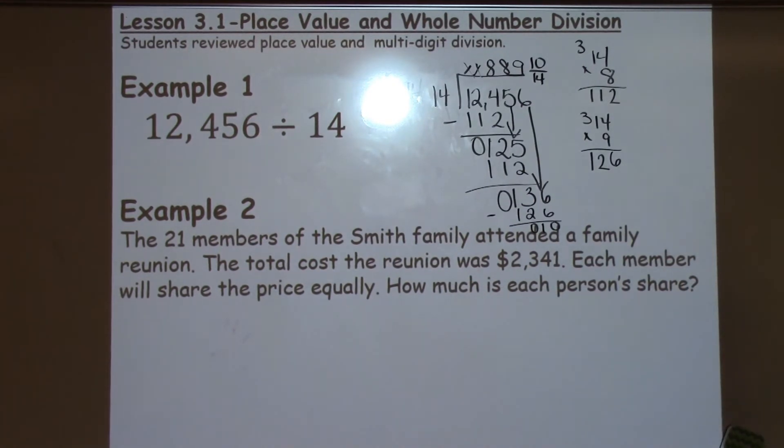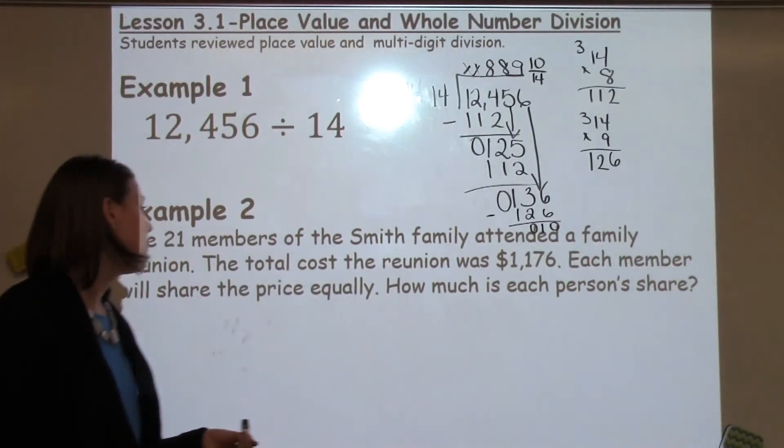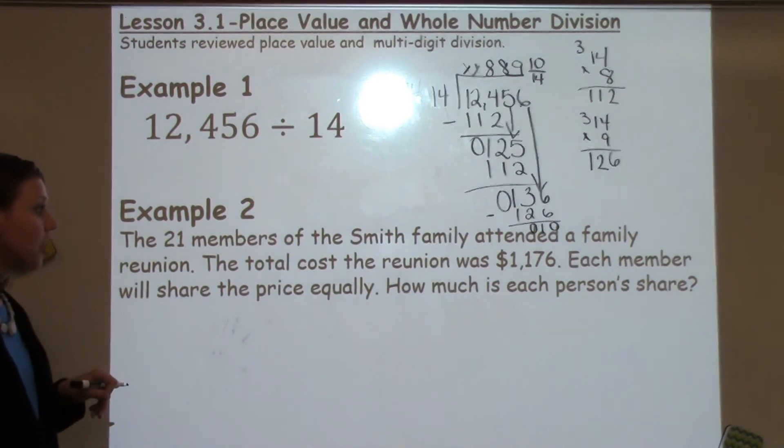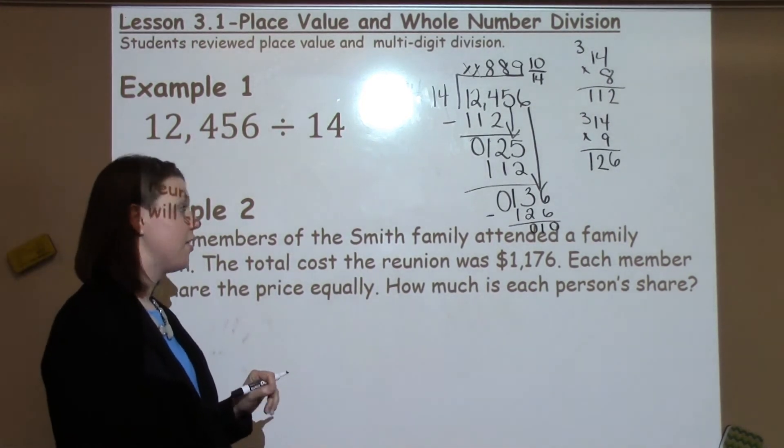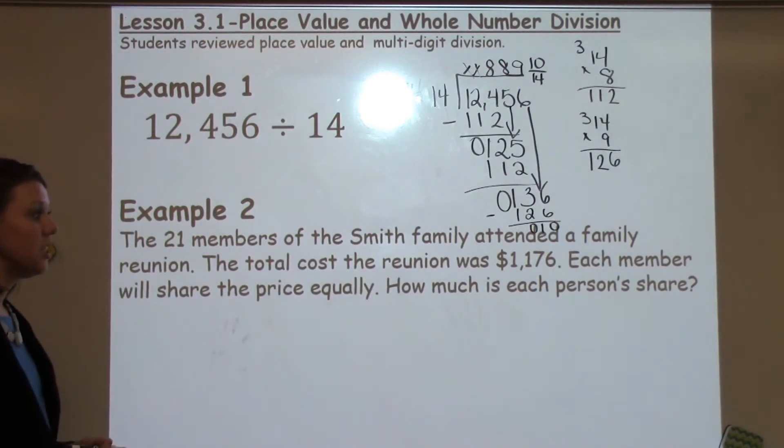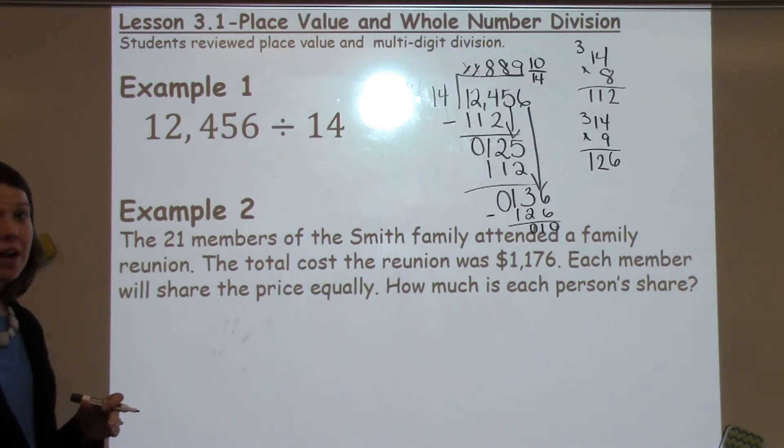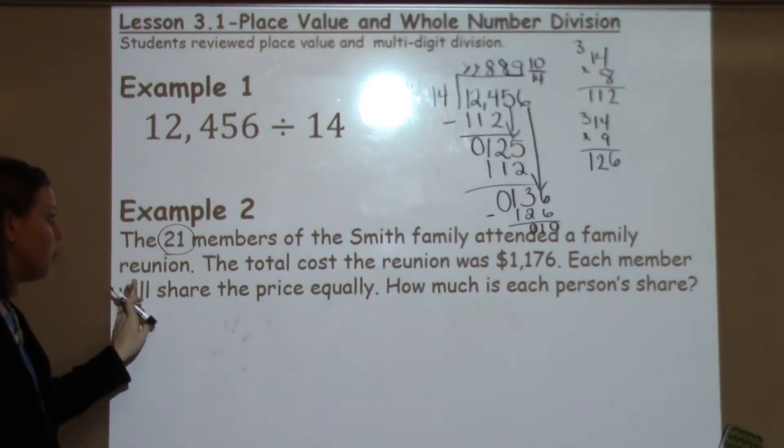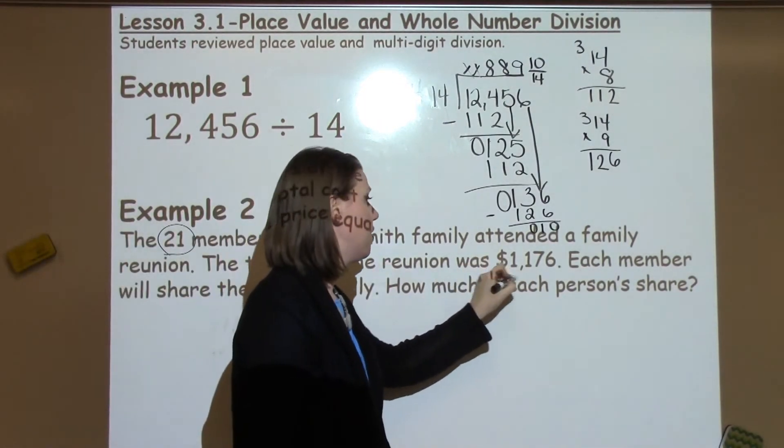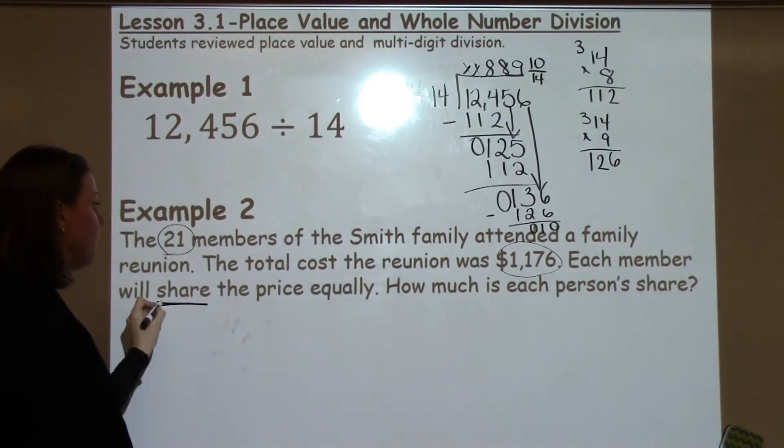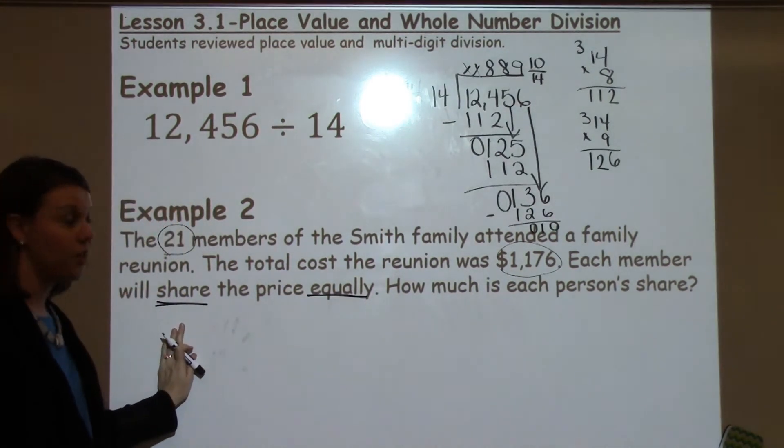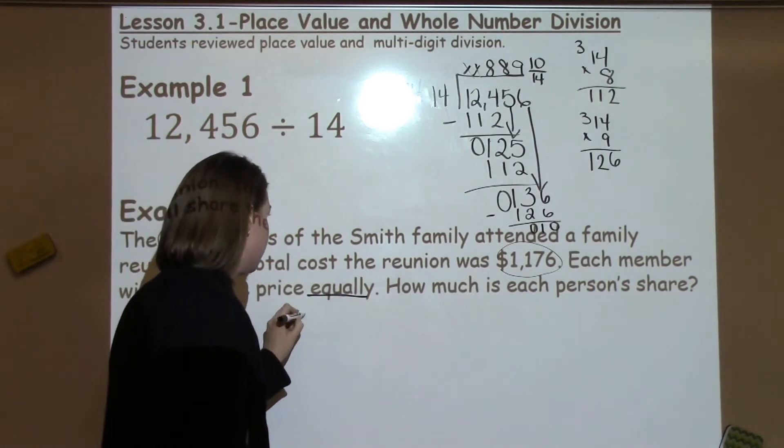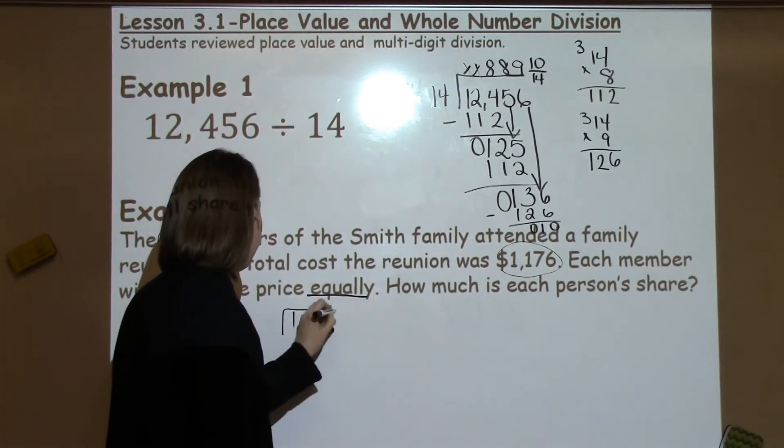Students also worked with word problems today. Example number 2 says, There are 21 members of the Smith family that attended a family reunion. The total cost for the reunion was $1,176. Each member will share the price equally. How much does each person share? Okay, now that I've read the problem one time, I'm going to go back and look for keywords. The 21 members of the Smith family, so I'm going to note that 21, and the total cost was $1,176. Each member is going to share the price equally, which I know share is a keyword for division.